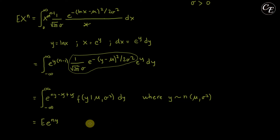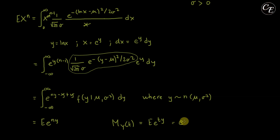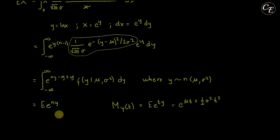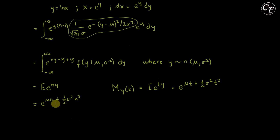This expression E[e^{ny}] is very similar to the moment generating function E[e^{ty}]. If we replace t by n, they are the same. For the normal distribution, the moment generating function is e raised to (mu*t + one-half sigma squared t squared). Replacing t by n, we get e raised to (mu*n + one-half sigma squared n squared), which can be rewritten as e raised to (n*mu + one-half n squared sigma squared). This is the n-th moment, E[x^n], for the log-normal distribution.